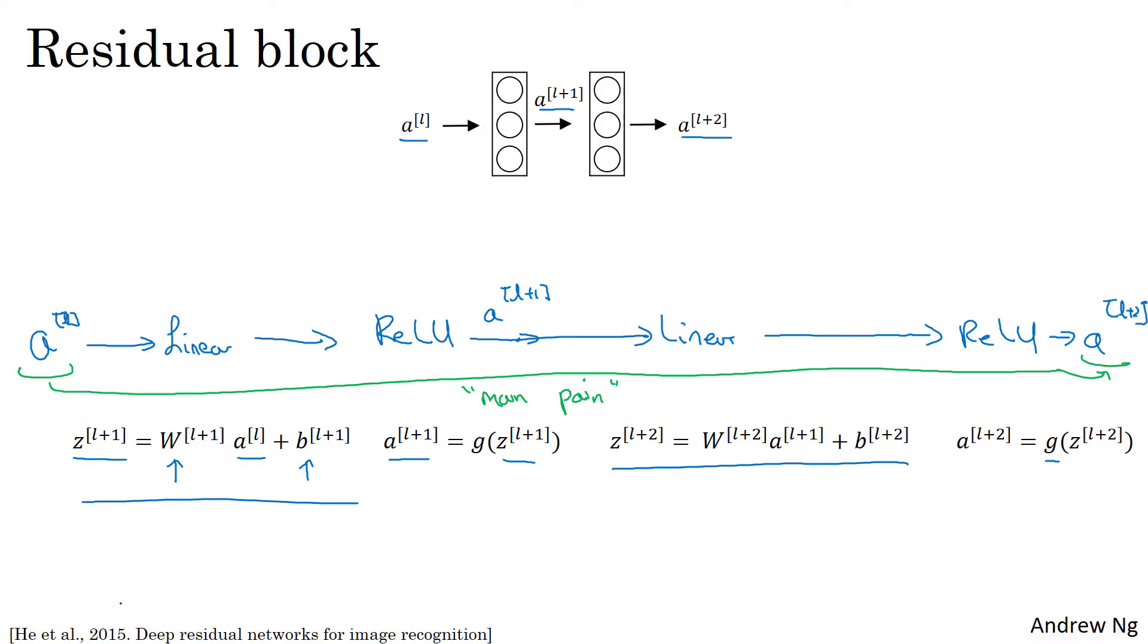In a residual net, we're going to make a change to this. We're going to take AL and just fast forward it, copy it much further into the neural network to here, and just add AL before applying the nonlinearity, the ReLU nonlinearity. And I'm going to call this the shortcut. So rather than needing to follow the main path, the information from AL can now follow a shortcut to go much deeper into the neural network. And what that means is that this loss equation goes away, and we instead have that the output AL plus two is the ReLU nonlinearity G applied to ZL plus two as before, but now plus AL. So the addition of this AL here, it makes this a residual block.